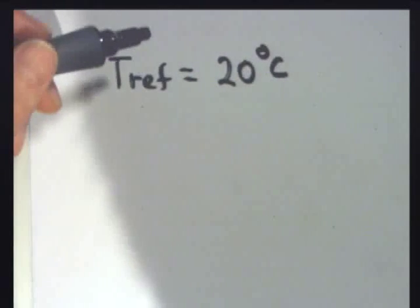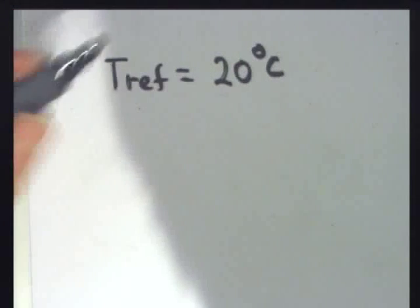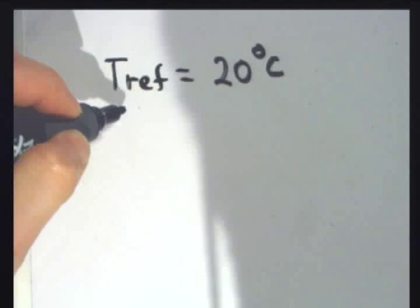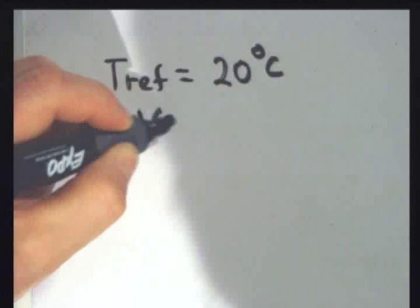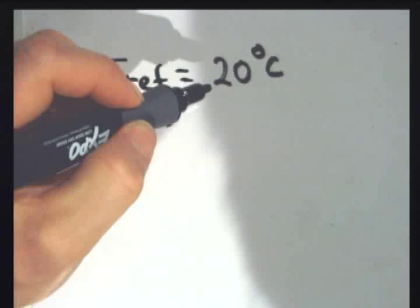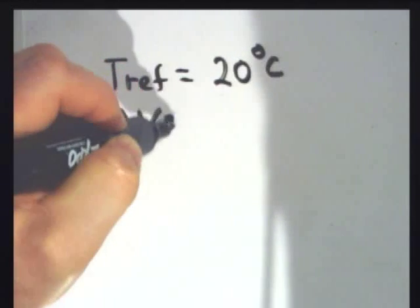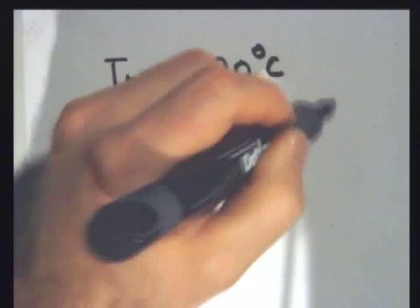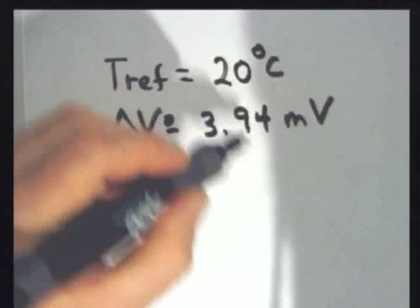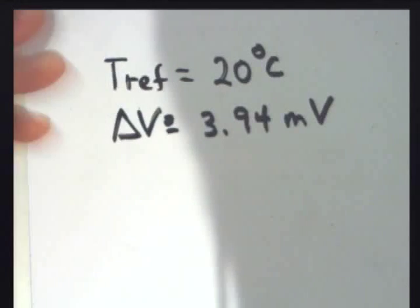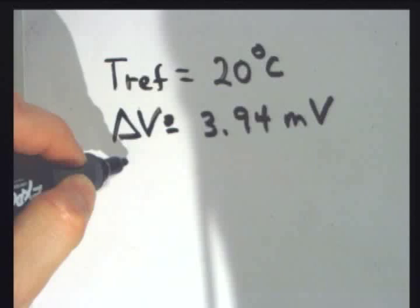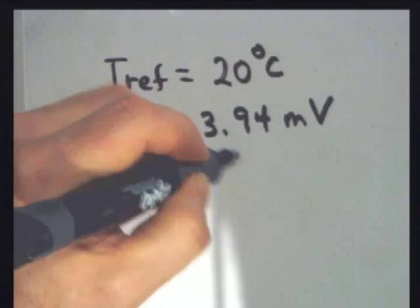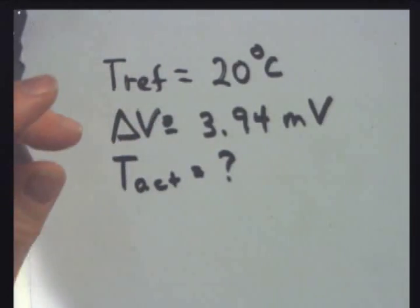One side is at room temperature - 20 degrees Celsius. I stick the other thermocouple lead in some water that's heating up, and I measure a voltage difference of 3.94 millivolts. Milli means one-thousandth, so this is 3.94 times 10 to the minus 3 volts. To find the actual temperature, I need to use a thermocouple chart.